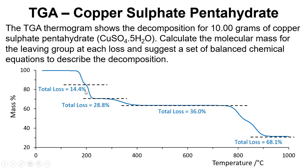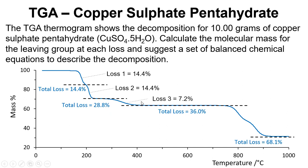These losses here are cumulative, so we need to work out the percentage loss for each step. Loss 1 is 14.4%, loss 2 is 14.4% as well, because what I'm calculating now is the difference for each step. So if we've gone from 14.4 to 28.4, that's an additional 14.4. The next one is 7.2% because I've gone from 28.8 to 36%, and the final one is 32.1%, which is the difference between 68.1 and 36.